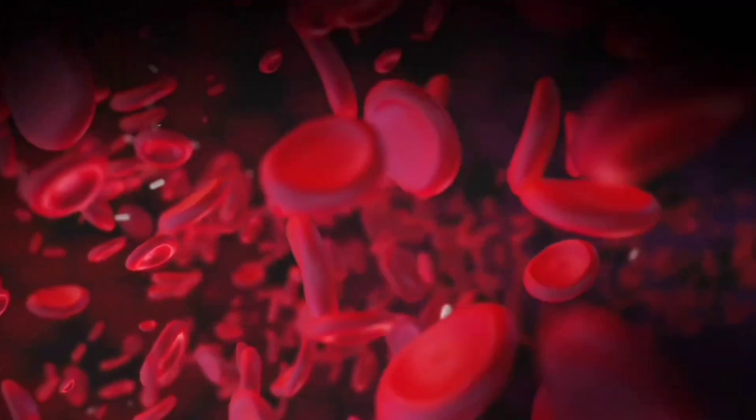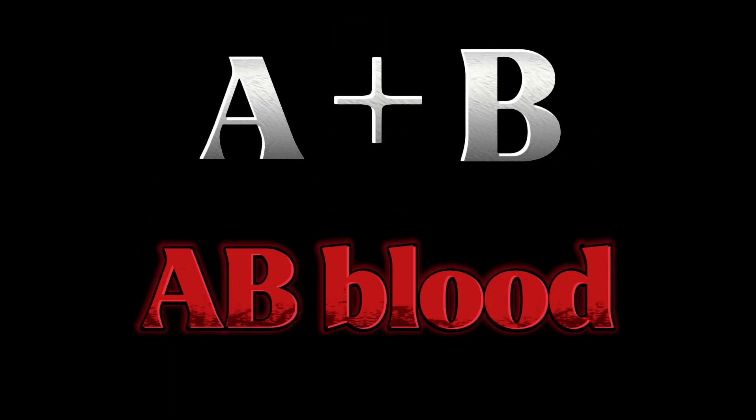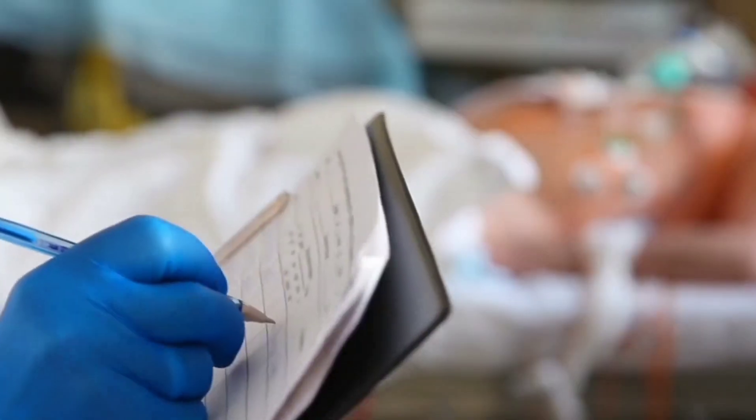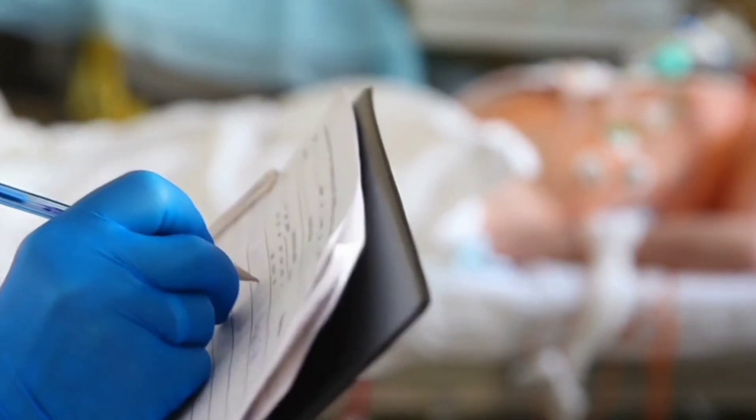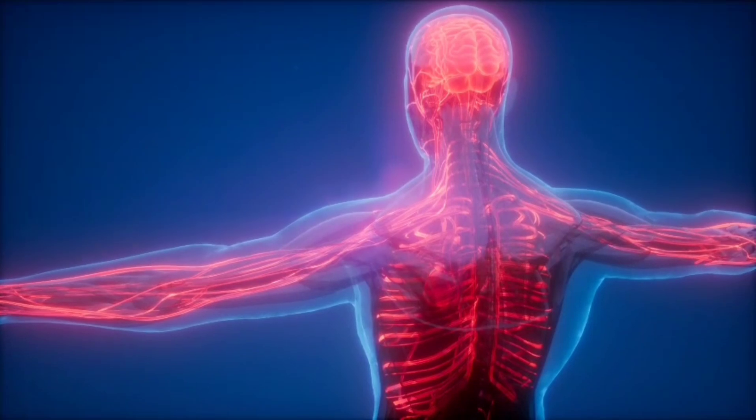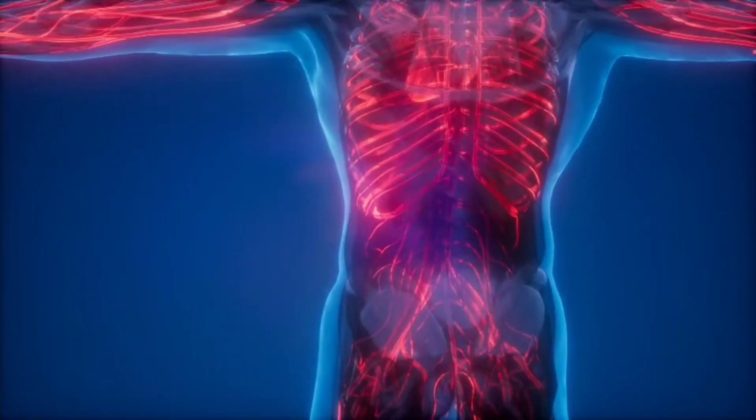Fact 19. AB blood type is determined entirely by genetics. If you inherit the A gene from one parent and the B gene from the other, you'll have AB blood. It's the only blood type that needs both A and B genes. That's why it's relatively rare. Both parents must carry the right genes. It doesn't skip generations. And you can't change it. It stays with you for life.